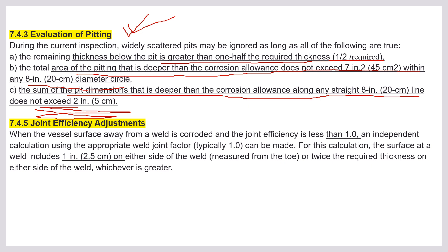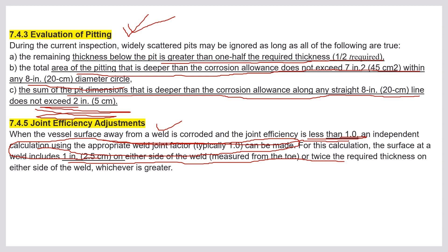Joint efficiency adjustment is also a common exam question. When the vessel surface away from the weld is corroded and the joint efficiency zone is less than 1 inch, an independent calculation using the appropriate weld joint efficiency can be made. For this calculation, the surface at the weld includes 1 inch on either side of the weld, or twice the required thickness on either side of the weld, whichever is greater. This close-book question has appeared in exams many times.